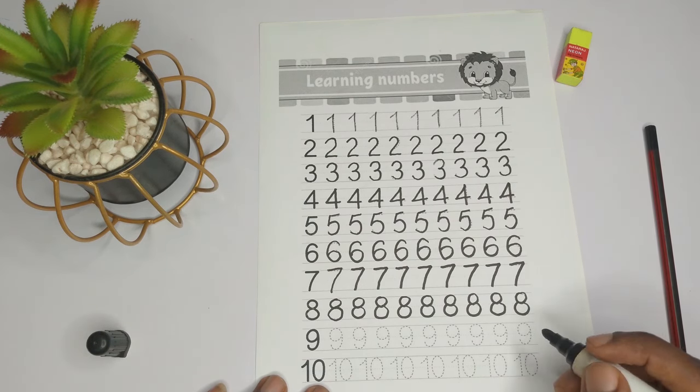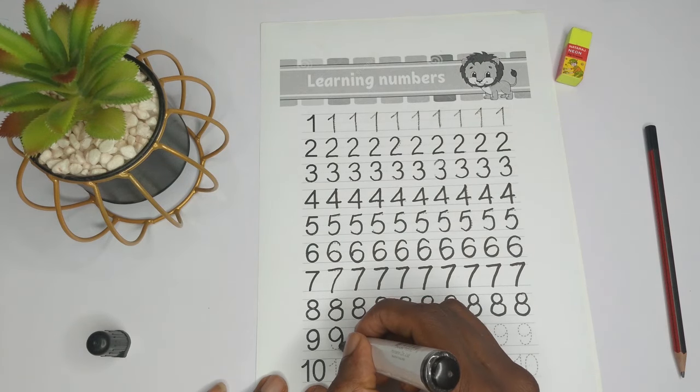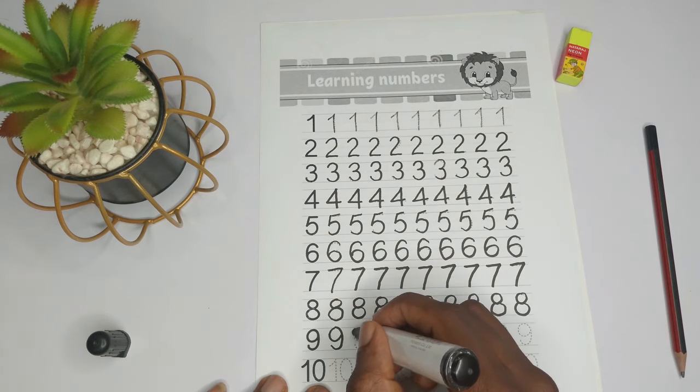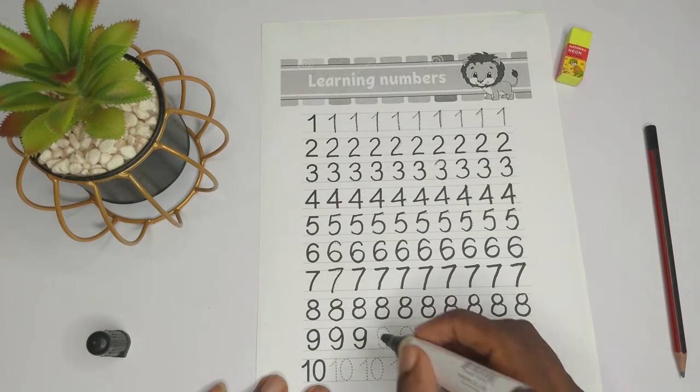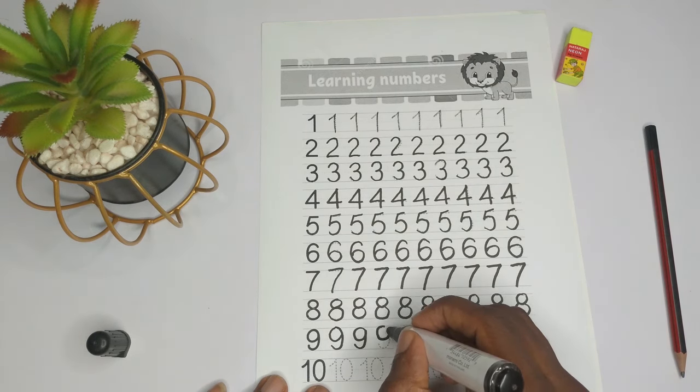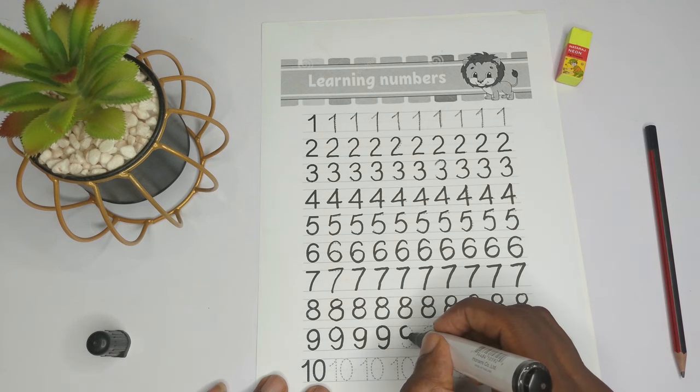So the next one is nine. Nine, okay, very good. Follow the dotted lines and give a little nine.